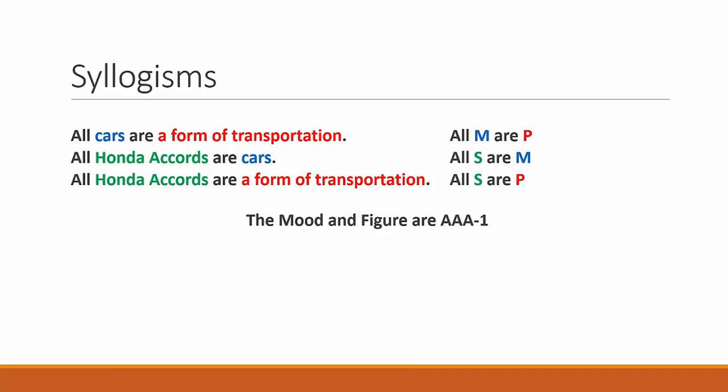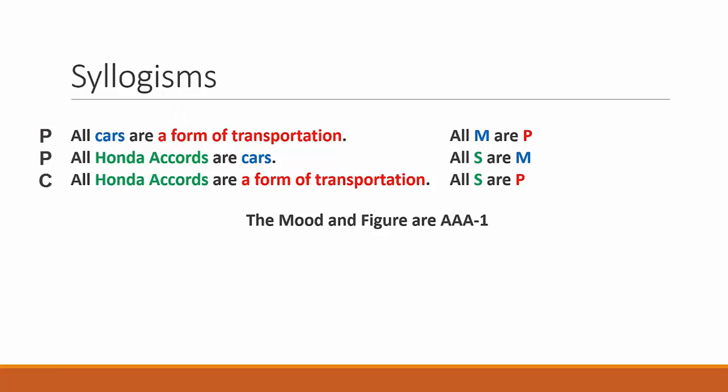Syllogisms are arguments with two premises and a conclusion. A standard form syllogism includes a predicate term in the first premise, a subject term in the second premise, and a middle term in each of the premises, and a conclusion. The conclusion is a standard form claim, such as all S are P, no S are P, some S are P, or some S are not P.